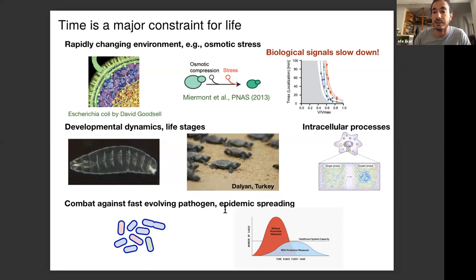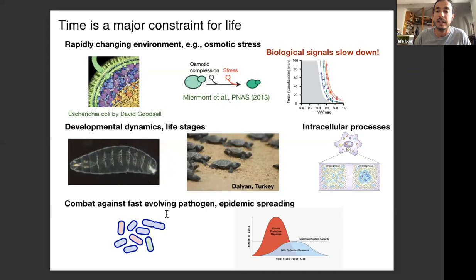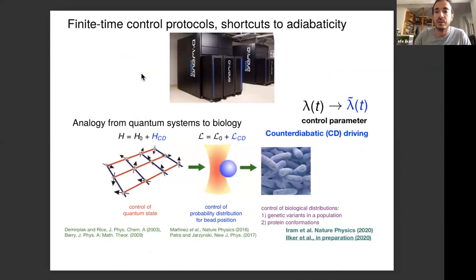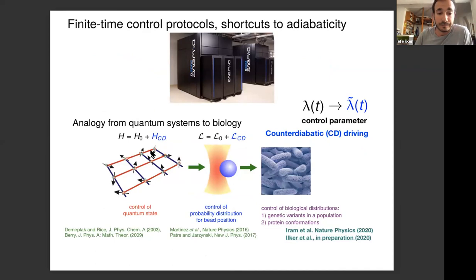This challenge also appears in developmental dynamics — organisms must follow certain sequences of events for a successful developmental program. In intracellular processes, cells make temporal decisions by localizing droplets to accelerate chemical reactions. At another scale, humanity's fight against fast-evolving pathogens is also a finite-time control problem — as with COVID-19, where while we find solutions we also try to slow the epidemic by social distancing. All these processes are stochastic, making real-time dynamics control more challenging.